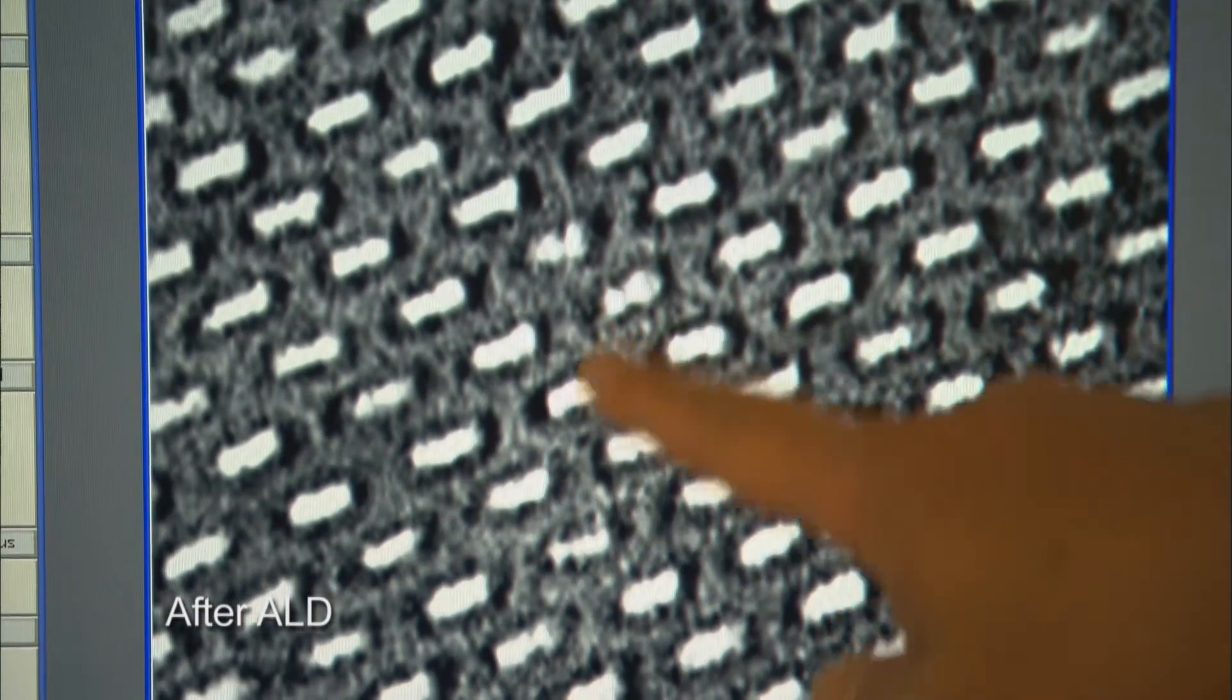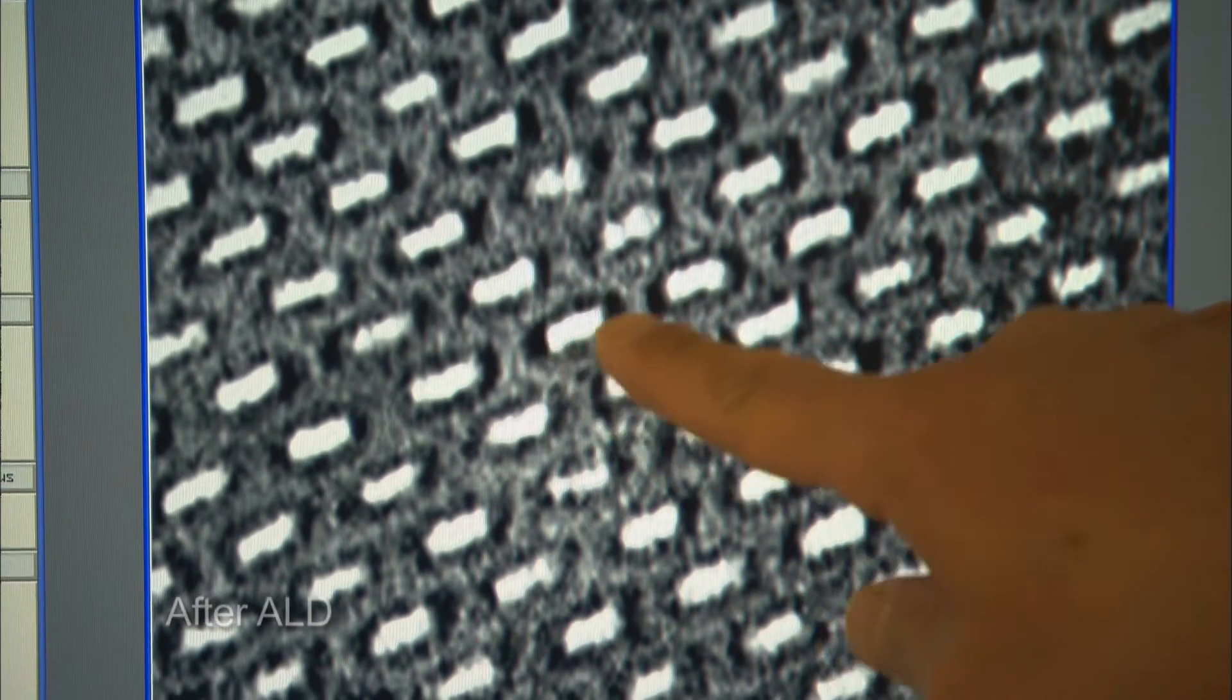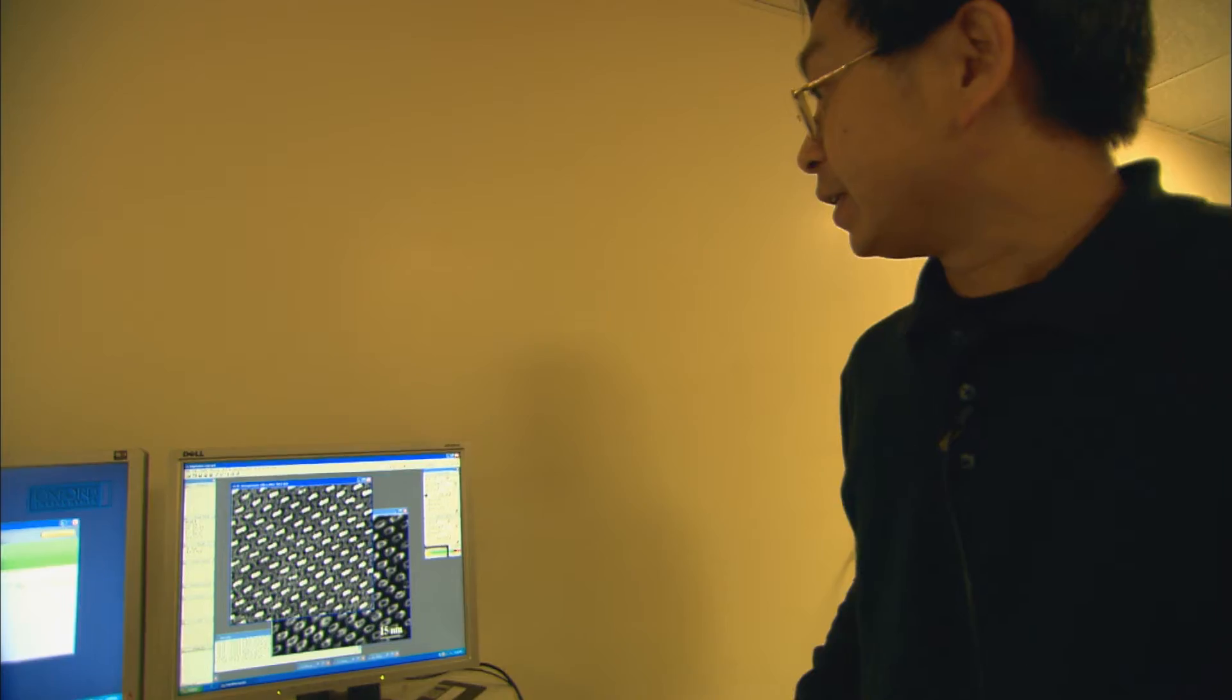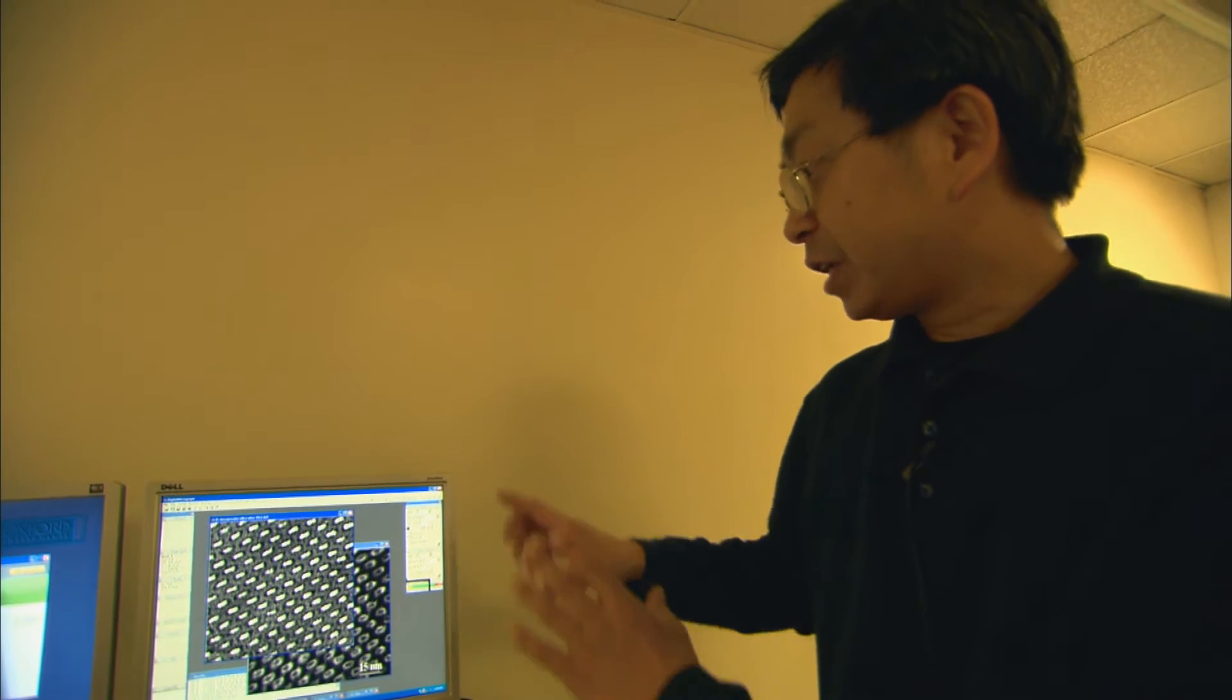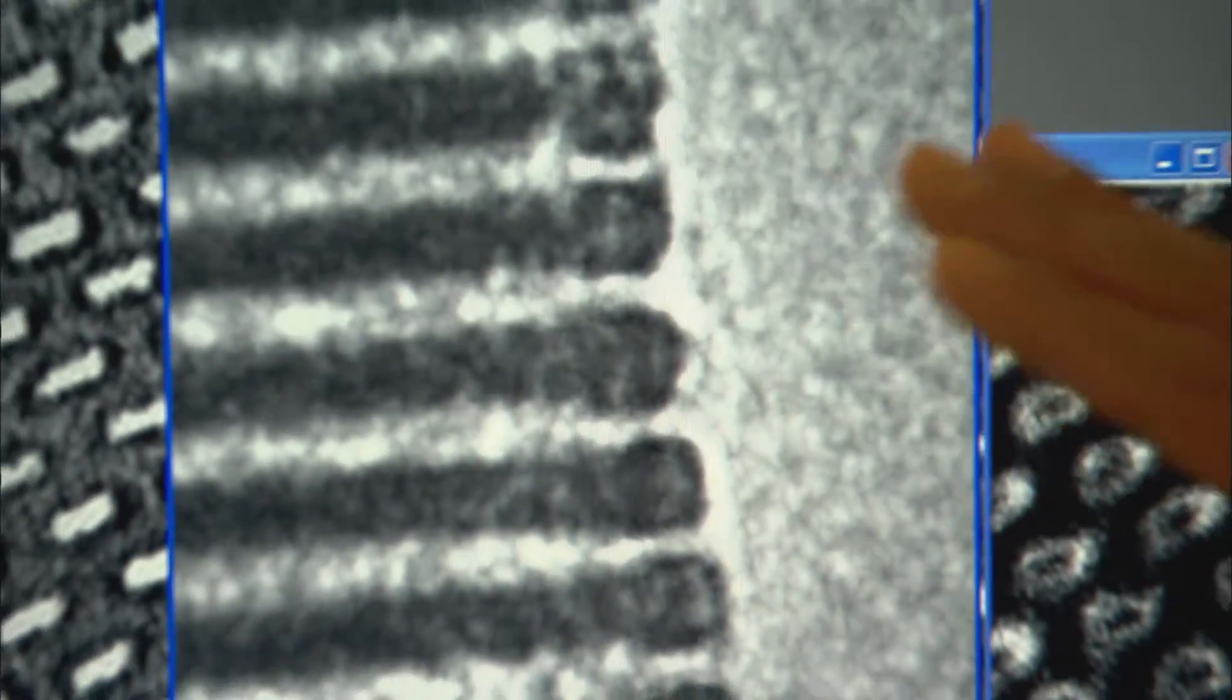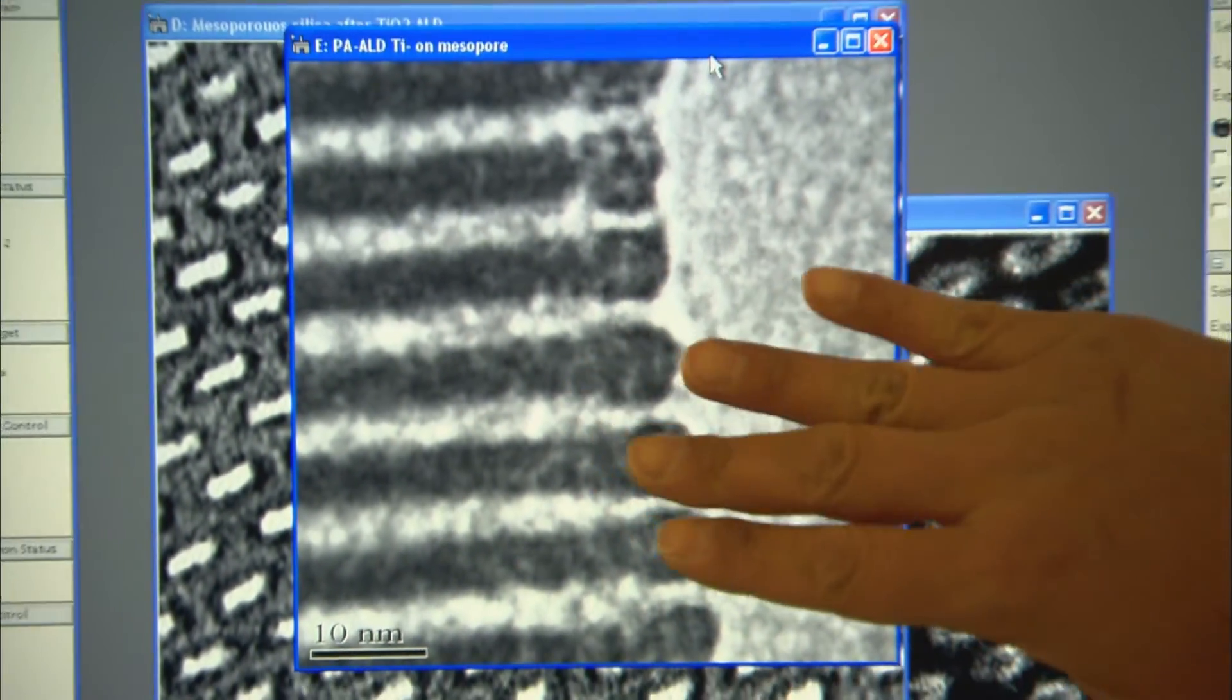To understand these nano-sized structures, the team's work is guided by transmission electron microscopes and computational modeling. If we keep doing this step by step, then we can reduce the pore size to be less than one nanometer, or some size close to the aquaporin diameter.